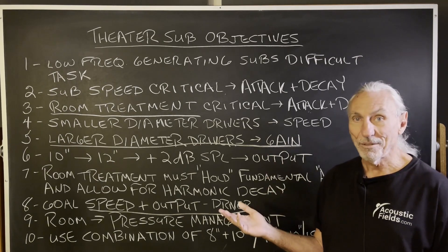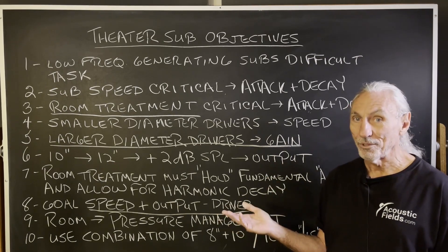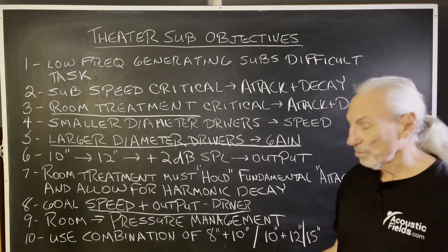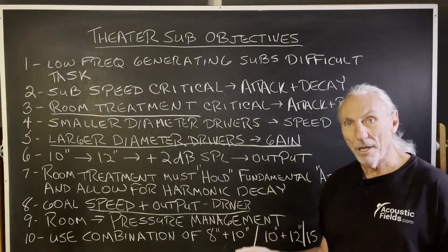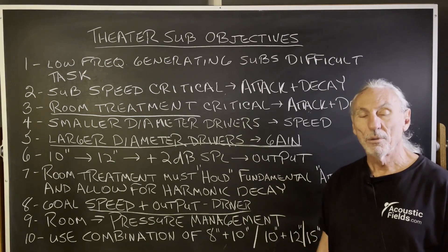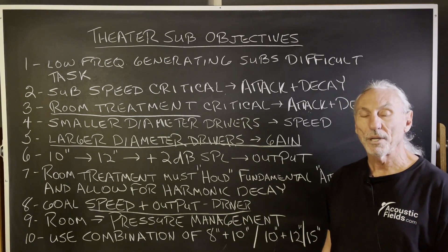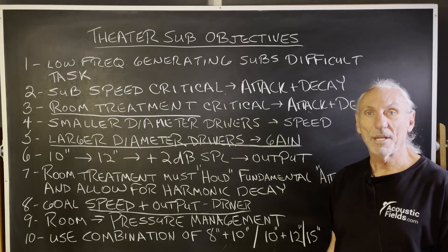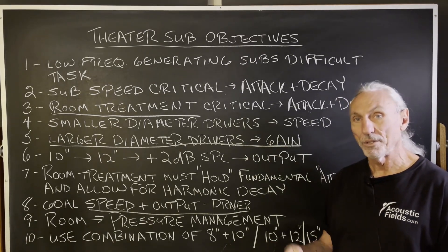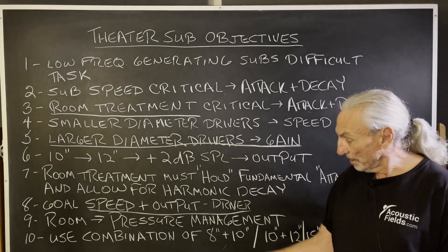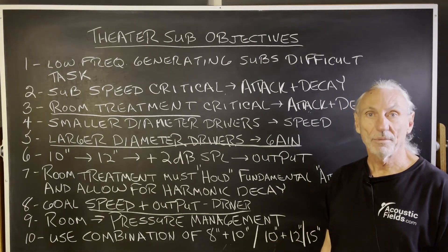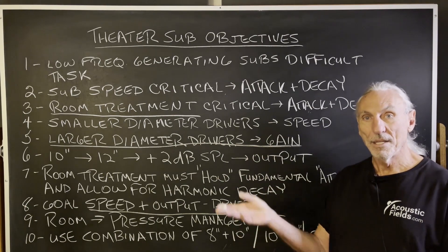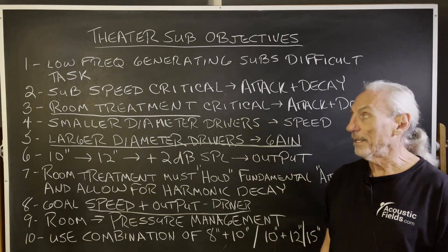Now that doesn't negate the fact that you still have to treat the room for low frequency management. But I think this combination — eights and tens, eights and twelves, tens and fifteens — we're going to try different combinations throughout the year and report back. Initially this seems to be a good balance. For those of you setting up home theater rooms, give this combination some consideration: driver diameter, speed, and room treatment — it's all a balancing act.